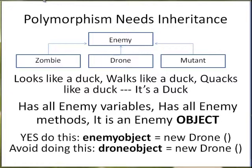There is an old saying: if it looks like a duck, walks like a duck, quacks like a duck, it's a duck. Well, I'm making up a new saying: if it has all of enemy's variables, and it has all of enemy's methods, then it's an enemy object. All three classes — zombie, drone, mutant — have enemy variables and methods. That is why they can be assigned to a variable of type enemy.